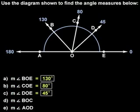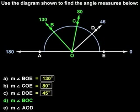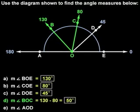Now let's find the measures of some angles that are more difficult to work with. First, angle BOC. To find the measure of this angle, we simply take the larger degree measure, which in this case is formed by ray OB at 130 degrees, minus the smaller degree measure, which is formed by ray OC at 80 degrees, to get 130 minus 80, or 50 degrees. Therefore, the measure of angle BOC is 50 degrees.